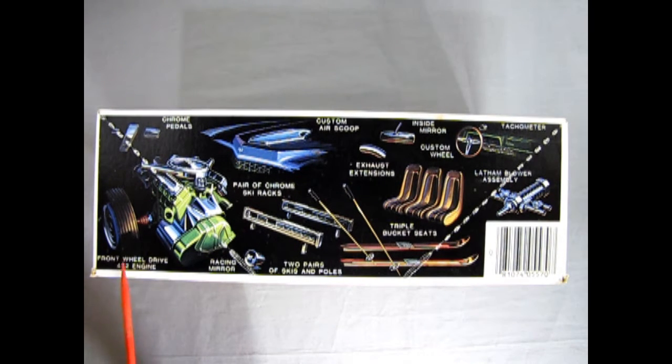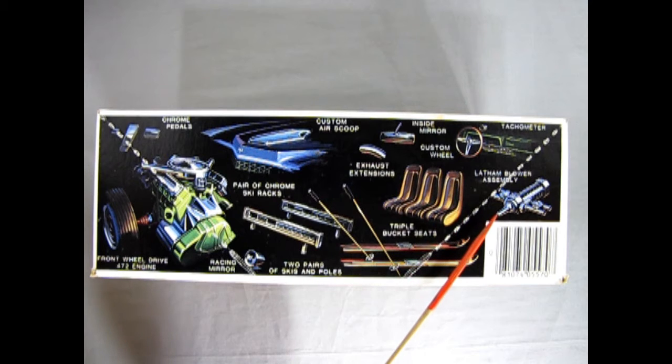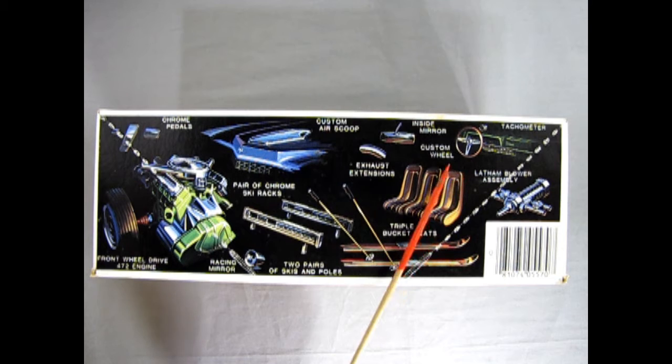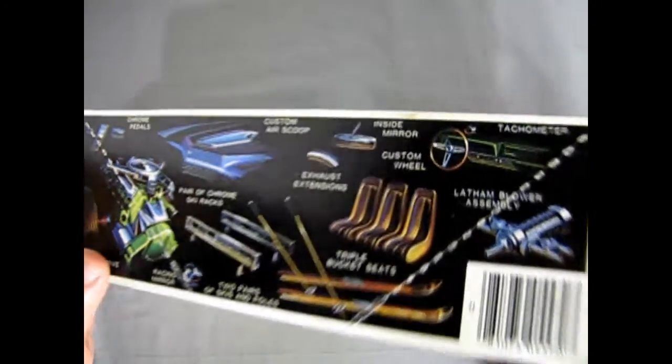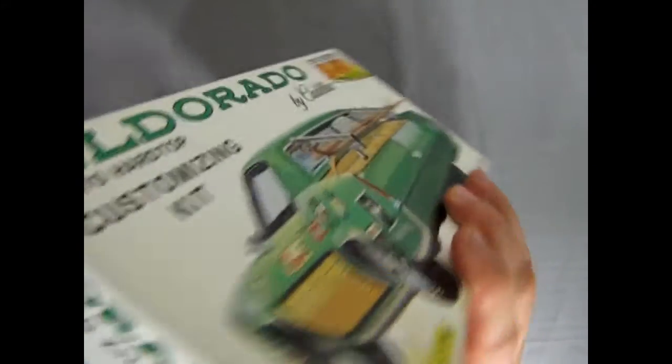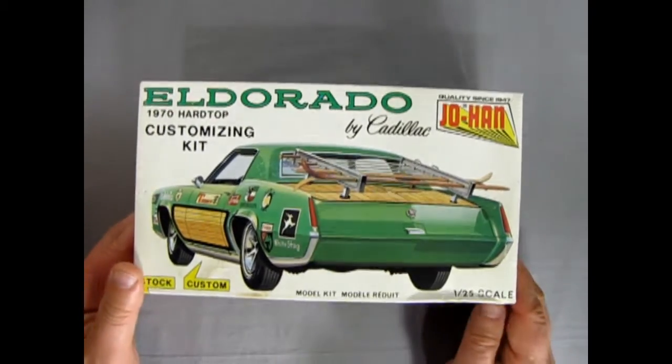The originals wouldn't have had the barcode because that came out in the mid-70s, I guess. Here we have a front-wheel drive 472 cubic inch engine, chrome pedals, racing mirrors, pair of chrome ski racks, two pairs of skis and poles, triple bucket seats, a Latham blower assembly, a tachometer, inside mirror, custom wheel, and exhaust extensions, and a custom air scoop. All these cool little parts in here, getting all rattled around.